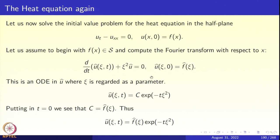We immediately solve this ODE: û(χ,t) equals C·e^(−tχ²). Putting t=0 and using û(χ,0) = f̂(χ), we get û(χ,t) = f̂(χ)·e^(−tχ²). Now e^(−tχ²) is a Gaussian, and it is the Fourier transform of another Gaussian. What function has Fourier transform e^(−tχ²)?